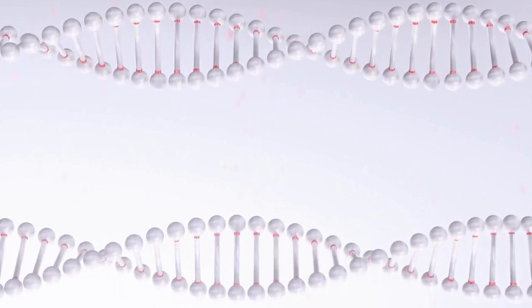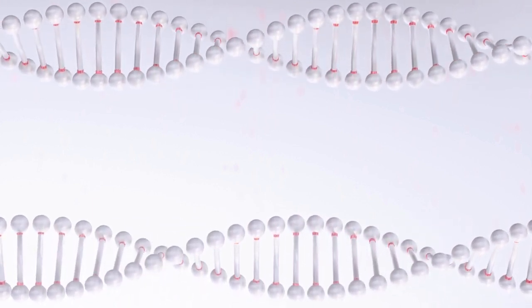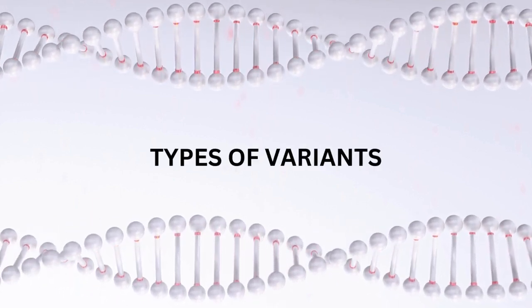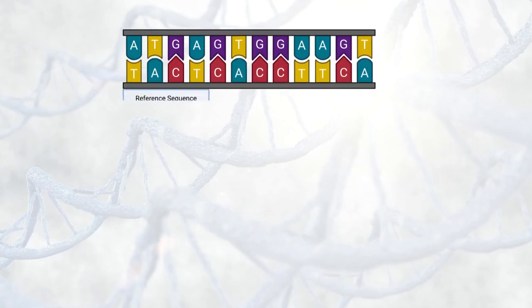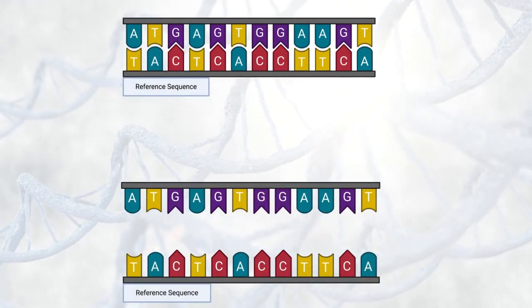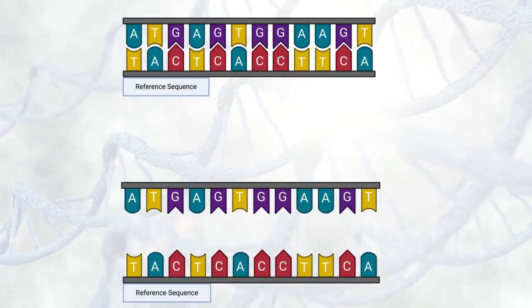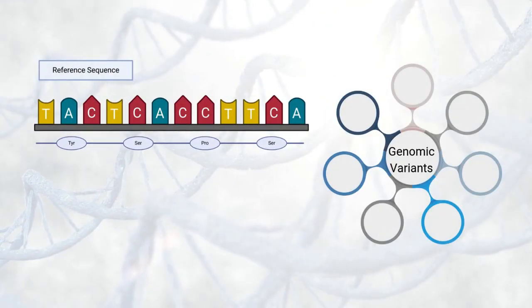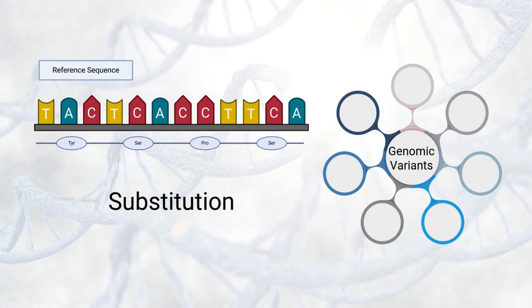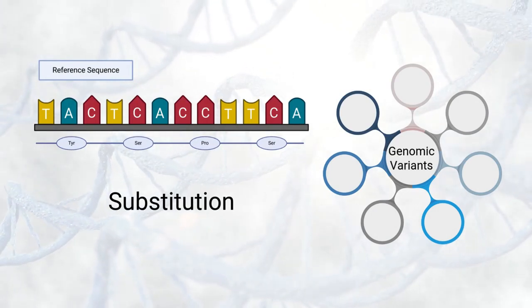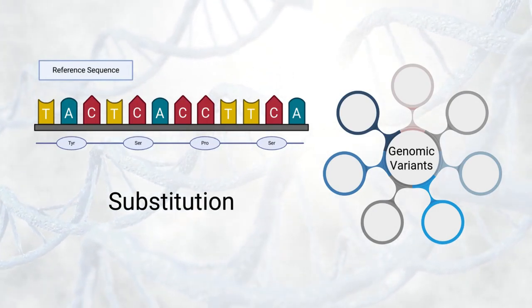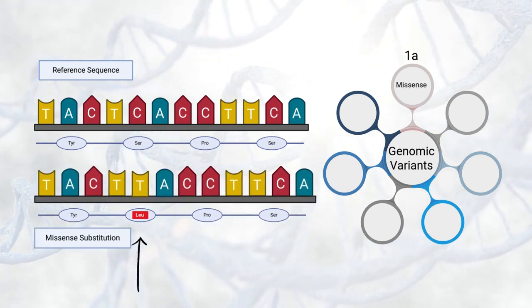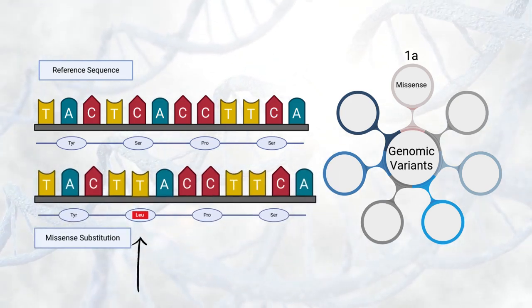Before diving into the specifics of variant interpretation, it is important to understand the types of variants, which will better help understand the process. We will look at a sample reference sequence and use this as a basis for assessing the types of variants. First is a substitution — this occurs when one nucleotide is replaced with a different nucleotide. If the nucleotide change results in a different amino acid, the variant is referred to as a missense variant.